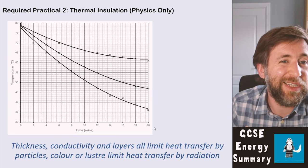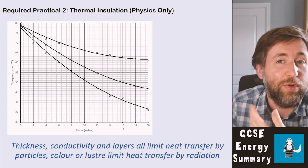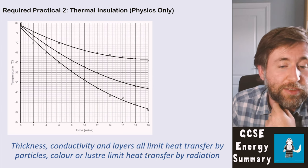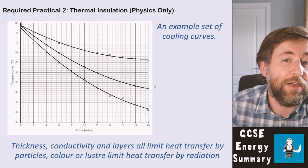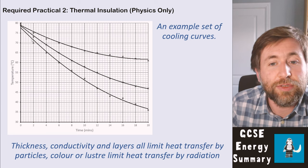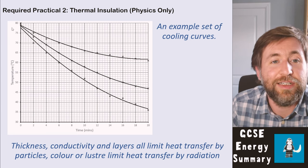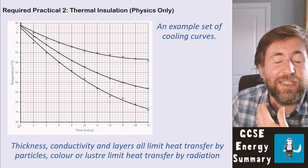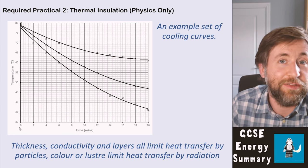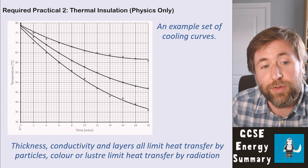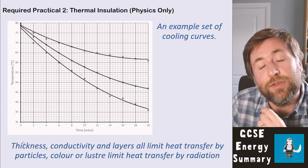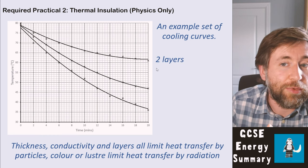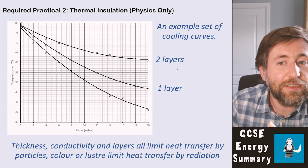When we just change one variable, we get these cooling curves. Time is measured in minutes — it's sufficient to take readings every one or two minutes. We can then analyze which line had the highest rate of cooling; the bottom line has done the worst job of being an insulator. Notice the graph does not start at zero, because the water will never actually reach zero degrees Celsius in a room. Start your graphs from somewhere sensible — it doesn't always have to show zero on the axes.